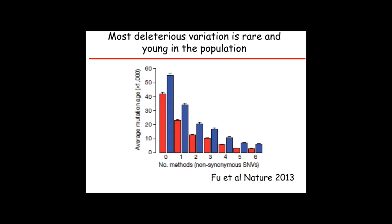If you look at deleterious alleles — and there are lots of ways to look at this — you can look at it by loss of function, splice variants, as eMERGE is doing. You can also apply every predictive method available; there are more than ten of these. Rare alleles predicted by all methods to be deleterious are very young in terms of the age of the mutation in the population — smaller is younger. These are alleles we would also like to get at.